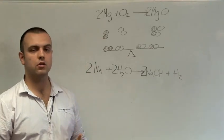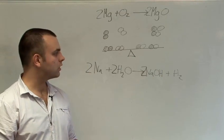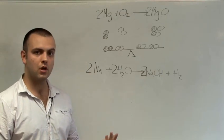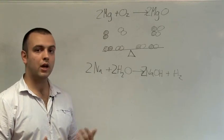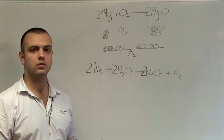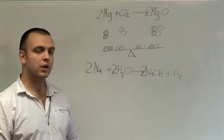It's often a method of trial and error to find the appropriate numbers to go in front of the appropriate molecules. But with enough practice it becomes second nature and you should never find an example where balancing it becomes too difficult. And that's how you balance equations.